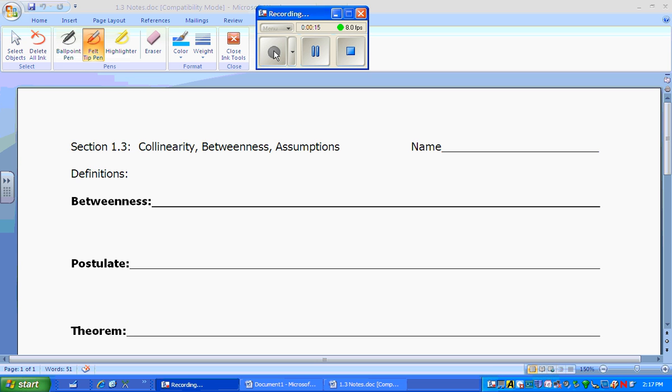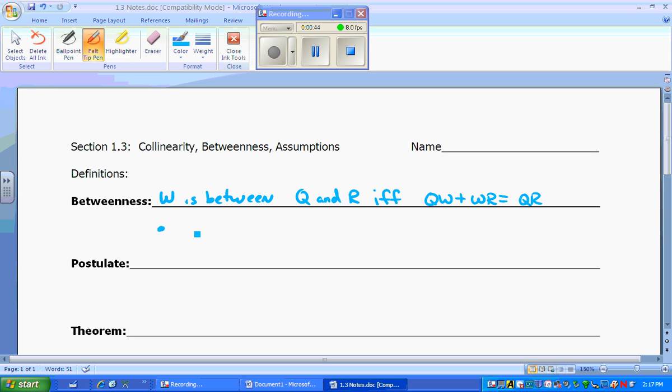The definition of betweenness says, through an example, W is between Q and R if and only if QW plus WR is going to equal QR. From a picture, we have Q and R, W is between them. It doesn't have to be in the middle, it has to be between them when the QW plus WR is equal to QR, the whole thing.